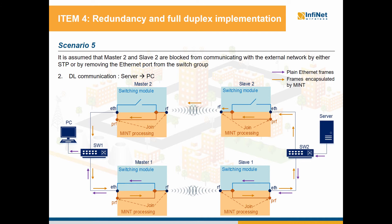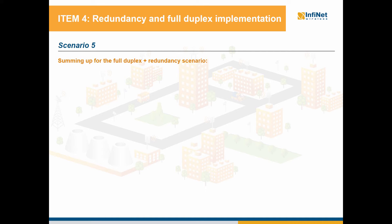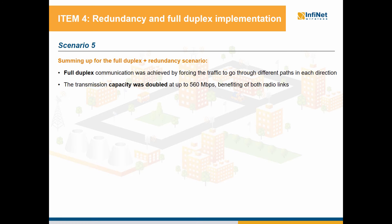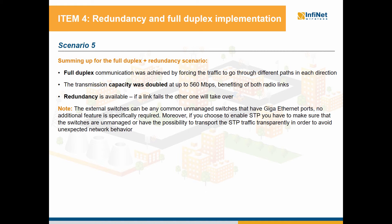This is the packet flow for the configuration we've performed. Summing up, we have gained some important benefits based on this scenario. Full duplex communication was achieved as we force the traffic to go through different paths in each direction. We have doubled the transmission capacity at up to 560 Mbps, benefiting of both radio links. We have redundancy because if a link fails, mint will use the remaining radio link for both uplink and downlink communication, as half duplex and at half rate, of course. As an additional mention about the external switches, those can be any simple unmanaged switches that have gigabit Ethernet ports — no additional feature is required, just switching speed. Moreover, as a warning, if you choose to enable STP on our units, you should make sure that the switch is unmanaged or that it can transport STP transparently in order to avoid unexpected network behavior in case of network configuration errors.